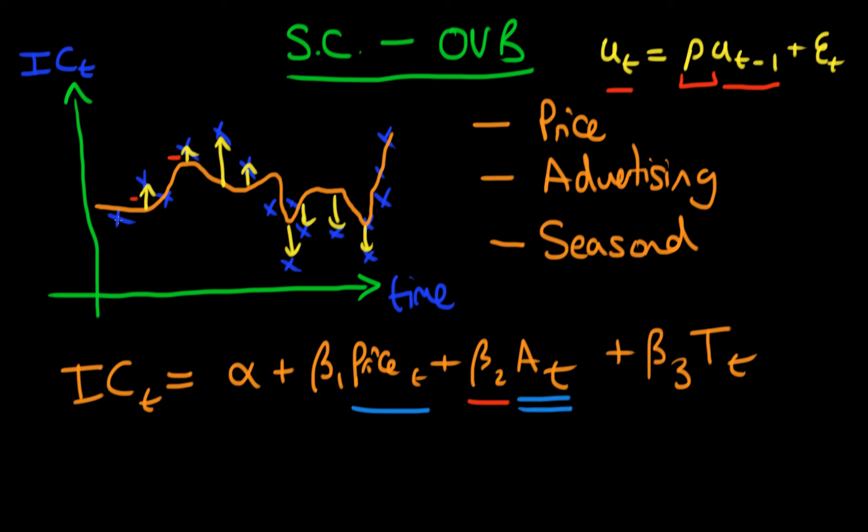...a lot better job explaining the variation in ice cream sales. So perhaps it would do something like this. Our model now is picking up the variations in ice cream sales that occur naturally throughout the year because of weather or people's tastes.